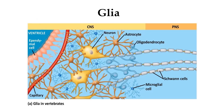Besides neurons, there are other cells in the nervous system called glia. Glia are non-neuronal supporting cells that nourish neurons, insulate axons, and regulate the extracellular fluid surrounding neurons. In the central nervous system, astrocytes are star-shaped cells that maintain the neurons' working environment and supply nutrients. Oligodendrocytes myelinate neurons in the CNS, performing the same function as Schwann cells do in the peripheral nervous system.